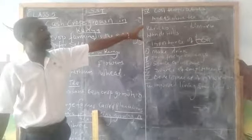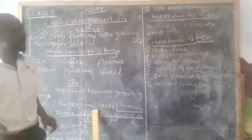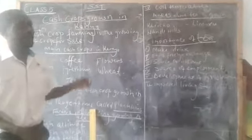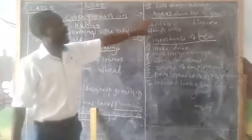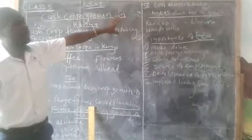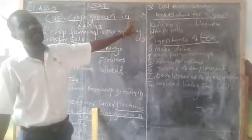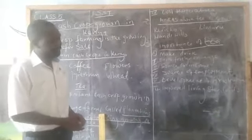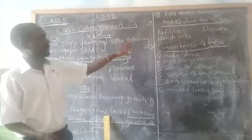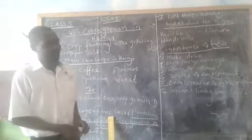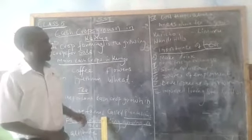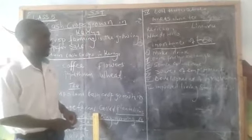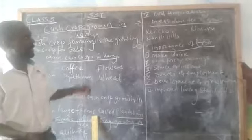So we have the areas where tea is grown in our country. We have Kericho, Nandi Hills, and Limuru. In these three areas, tea is grown in large plantations. We also have other areas where tea is grown on a small scale, such as Kiambu, around the Imenti tea area, and Harvest.